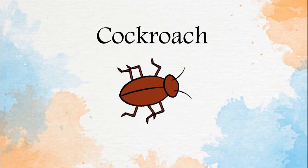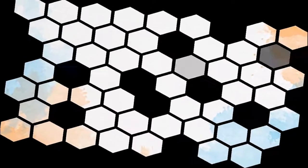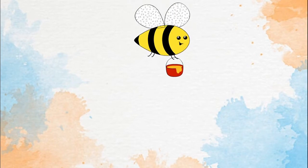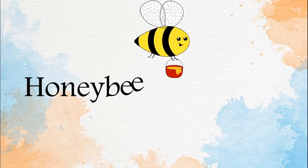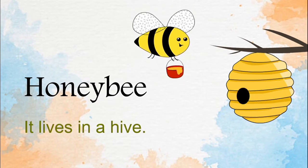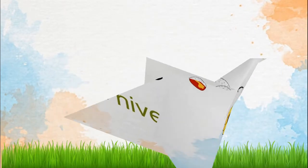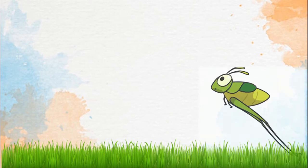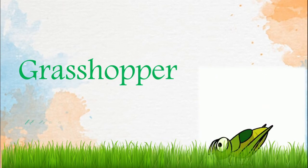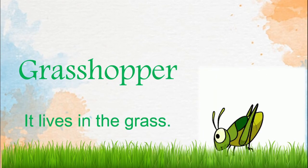Now let's play together! What is it? It is a honeybee. The honeybee lives in a hive. Hop, hop, hop — grasshopper! It lives in the grass.